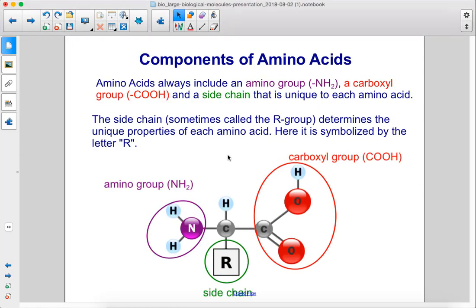Amino acids always include an amino group, a carboxyl group, and a side chain that is unique to each amino acid. The side chain, sometimes called the R group, determines the unique properties of each amino acid. Here it is symbolized by the letter R.